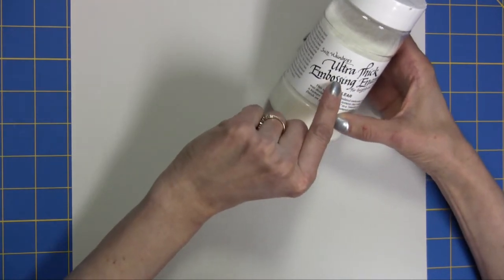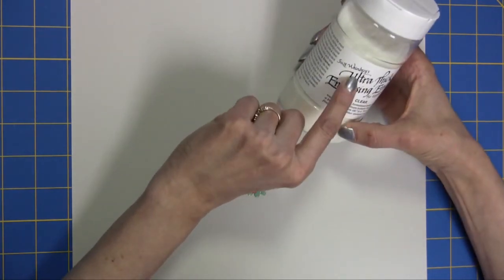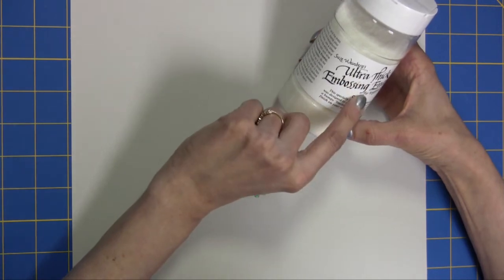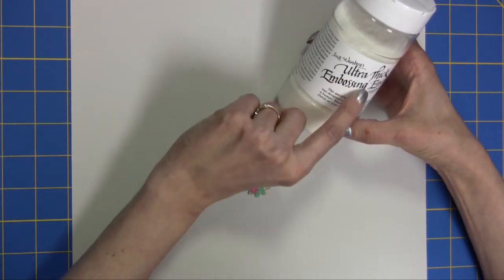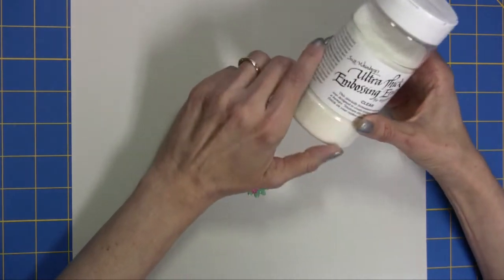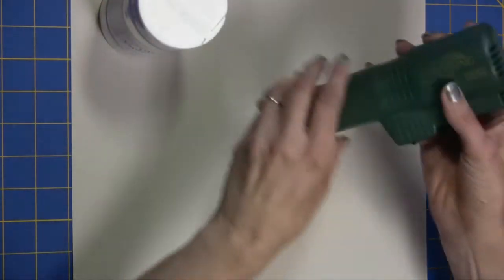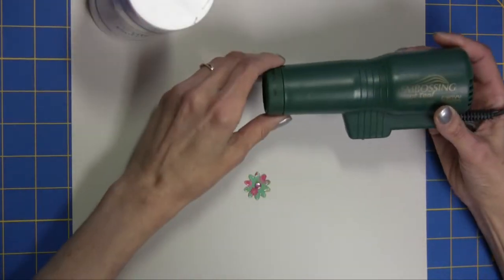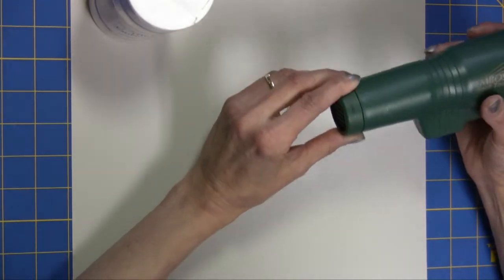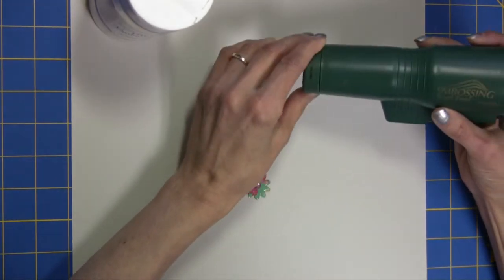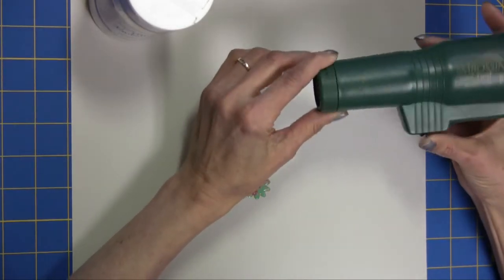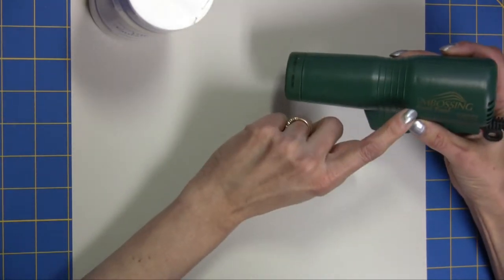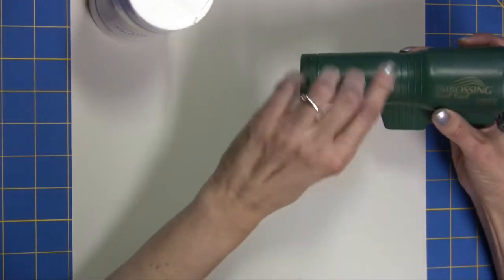For this technique you're going to need what is called ultra thick embossing enamel. This particular one is from Suze Weinberg's but Ranger has ultra thick embossing enamel you can pick up at Michael's. You'll also need a heat embossing tool. It looks sometimes like a hairdryer but it's specially made for stamping and embossing. This one is from Marvy.